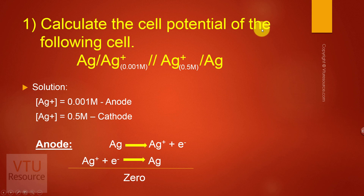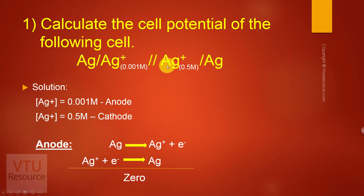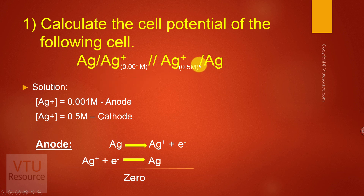Calculate the cell potential of the following cell: Ag | Ag⁺ (0.001 M) || Ag⁺ (0.5 M) | Ag. Here, in order to determine which is anode and cathode, the main thing is concentration.